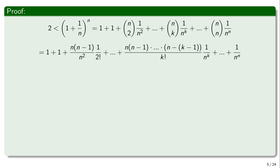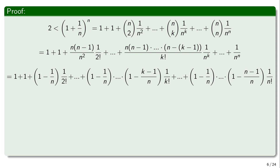We rearrange because in the numerator we have n^k and exactly k terms — from n down to n − (k−1) — so there are exactly k numbers. One of the n's in the numerator cancels with the n in the denominator, giving n/n = 1 − 1/n, and similarly each factor becomes 1 − j/n for the appropriate j, dividing each expression by n.